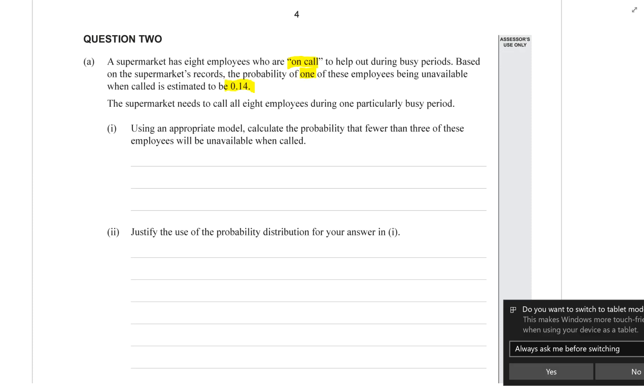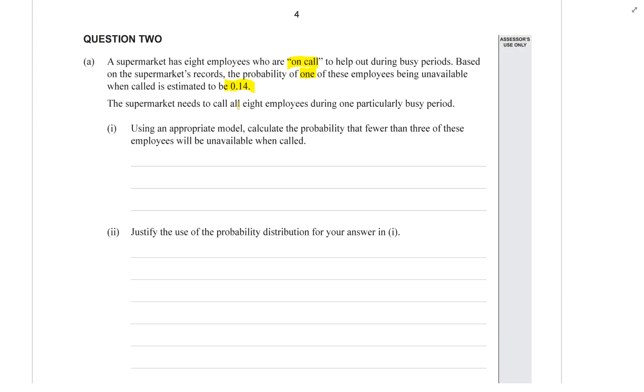The supermarket needs to call all 8 employees during one particularly busy period. Using an appropriate model, calculate the probability that fewer than 3 of these employees will be unavailable when called.